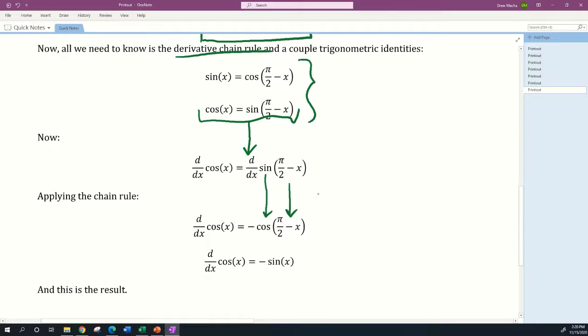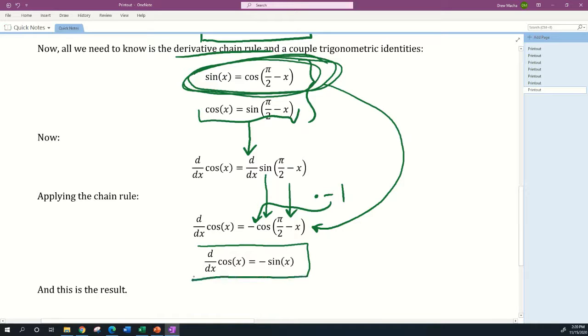So we have d/dx cos(x) = -cos(π/2 - x). Now we remember that sin(x) = cos(π/2 - x), and we apply this. We get that the derivative of cos(x) is equal to -sin(x), and this is our result. Okay, so I didn't put this in the lesson but I should have because I think this is interesting enough.